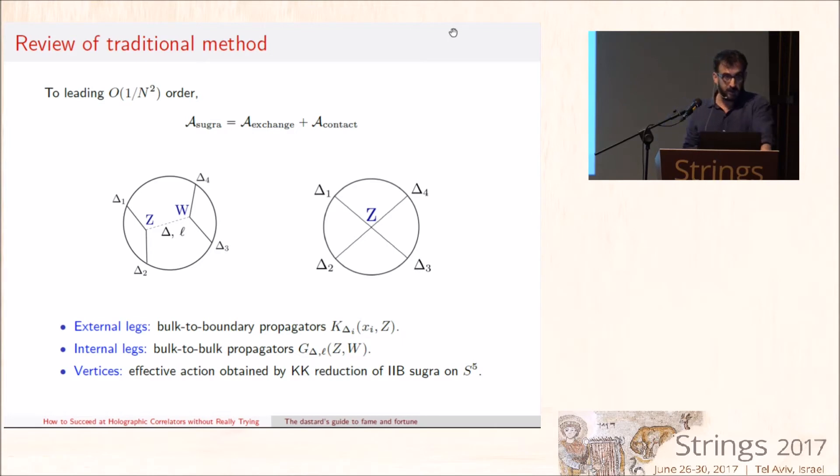I will now give you a lightning review of the traditional method, which is standard Feynman perturbation theory in position space. At large N, the leading contribution comes from disconnected diagrams, which are trivial, because the product of two-point functions are protected. So, the first interesting contribution comes from order 1/N².